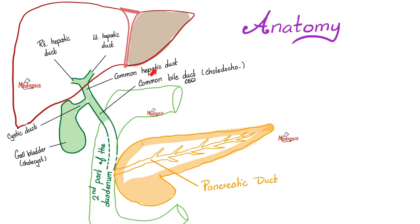The common hepatic duct is going to unite with the cystic duct, which is the duct of the gallbladder. The cystic duct plus the common hepatic duct unite together to form the common bile duct, or CBD. Then the common bile duct combines with the pancreatic duct and they open together in the posteriomedial aspect of the second part of the duodenum.